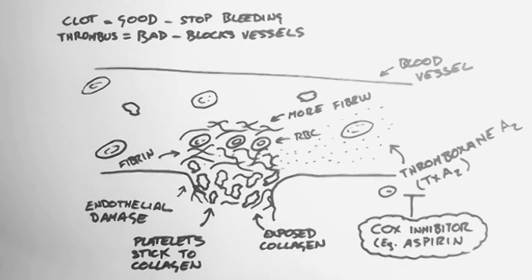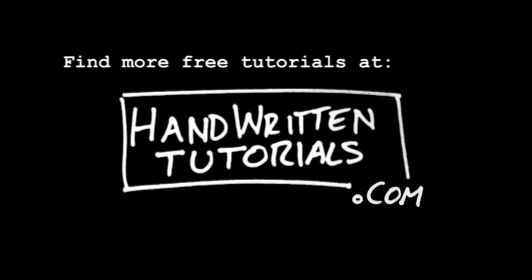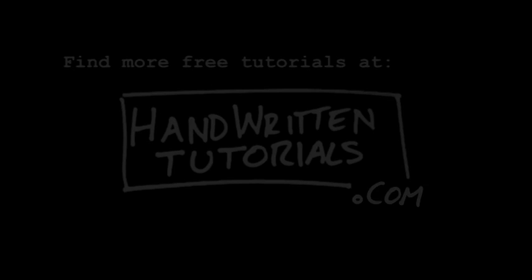And that's an overview of clots, thrombi, and anti-platelets. We'll have a look at how the production of fibrin is controlled in the next tutorial. For more free tutorials, and the PDF which accompanies this tutorial, visit www.HandwrittenTutorials.com.